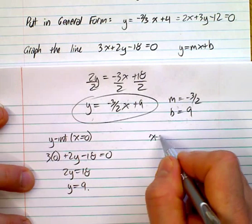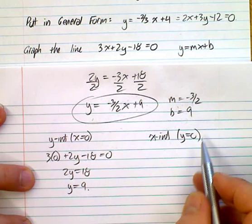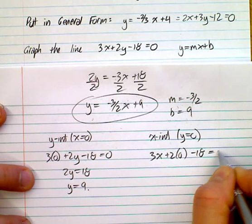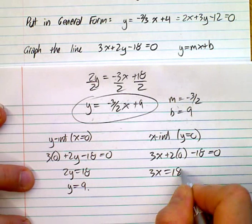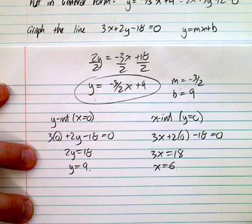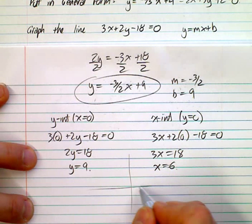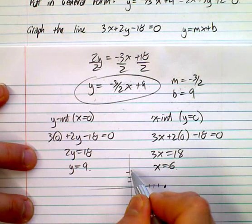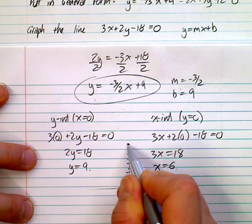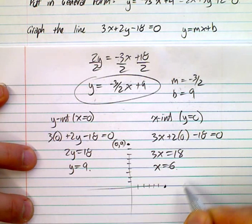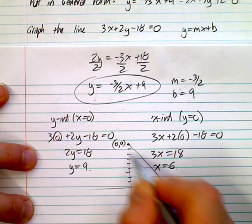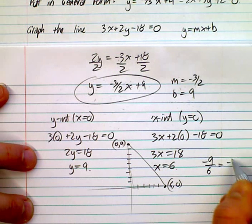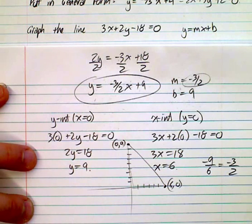For the x-intercept, set y equal to zero: 3x minus 18 equals zero, so 3x equals 18, giving x equals 6. So the line crosses the x-axis at (6, 0) and the y-axis at (0, 9). You can also verify the slope from these intercepts: it's down 9 over 6, which simplifies to negative three-halves — matching what we found. Intercepts are a very valuable tool when dealing with linear functions.